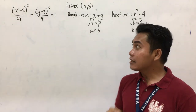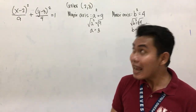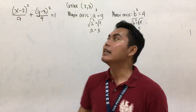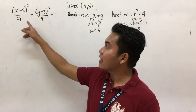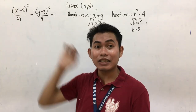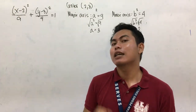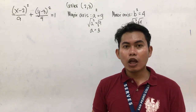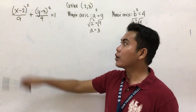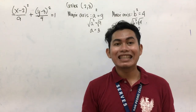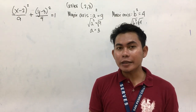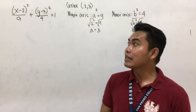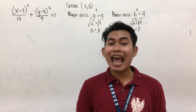Since our major axis lies on the x term, that means the graph is vertical. Again, since our major axis lies on the x-squared term, the graph is vertical. So watch for that, and let's proceed to our main objective: we are going to transform this one into general form.